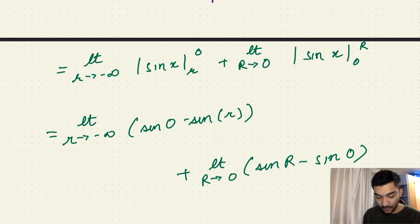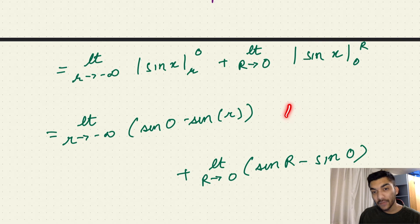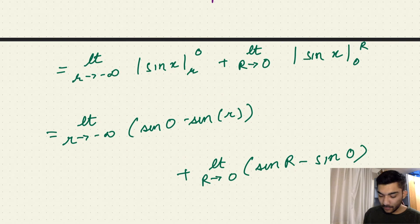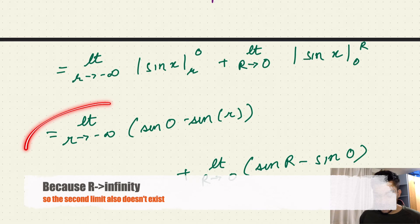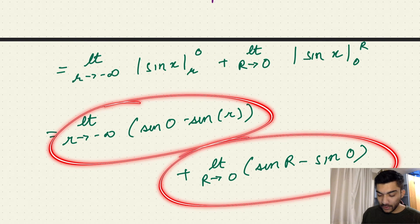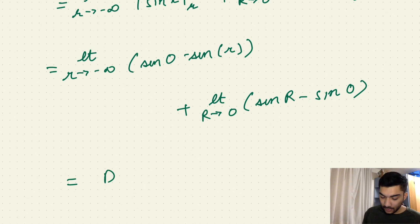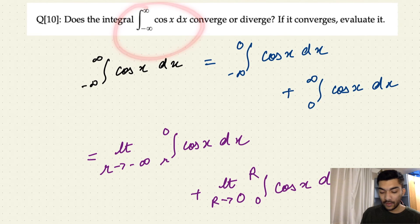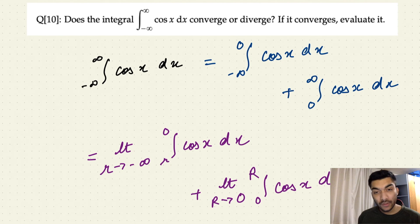You can clearly see that as r approaches minus infinity, the expression approaches infinity, because minus of sine(minus infinity) equals minus of minus sine(infinity) — since sine(−x) = −sine(x) — so this expression will approach infinity, and the second expression will also approach infinity. So both of these limits do not exist, meaning the final expression's limit also does not exist. Therefore, the integral of cos x dx from minus infinity to infinity diverges.